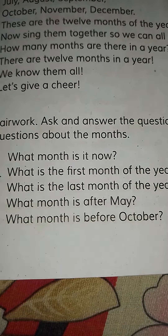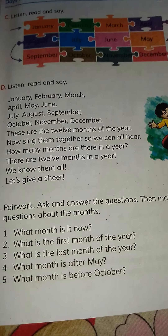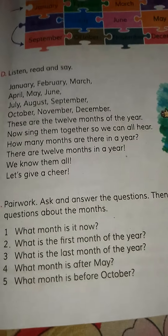What is the first month of the year? The first month of the year is January. What is the last month of the year? The last month of the year is December. What month is after May? After May comes the month of June.